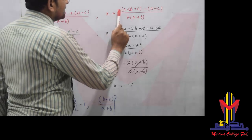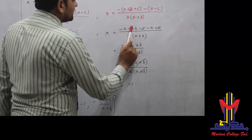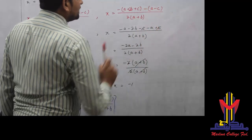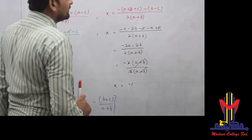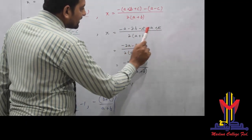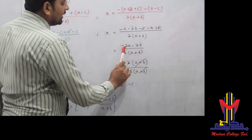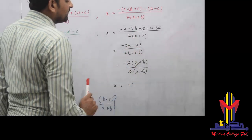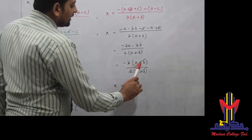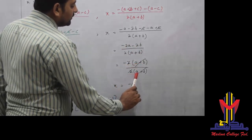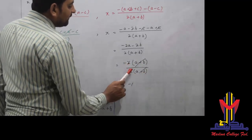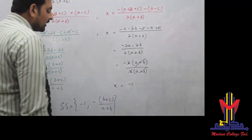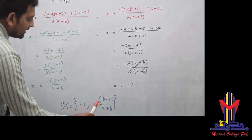For the second root (minus case): x = [-(A+2B+C) - (A-C)] / [2(A+B)]. Expanding: (-A - 2B - C - A + C) / [2(A+B)]. The +C and -C cancel, giving (-2A - 2B) / [2(A+B)]. Taking -2 common: -2(A+B) / [2(A+B)]. The 2 and (A+B) both cancel, leaving x = -1.